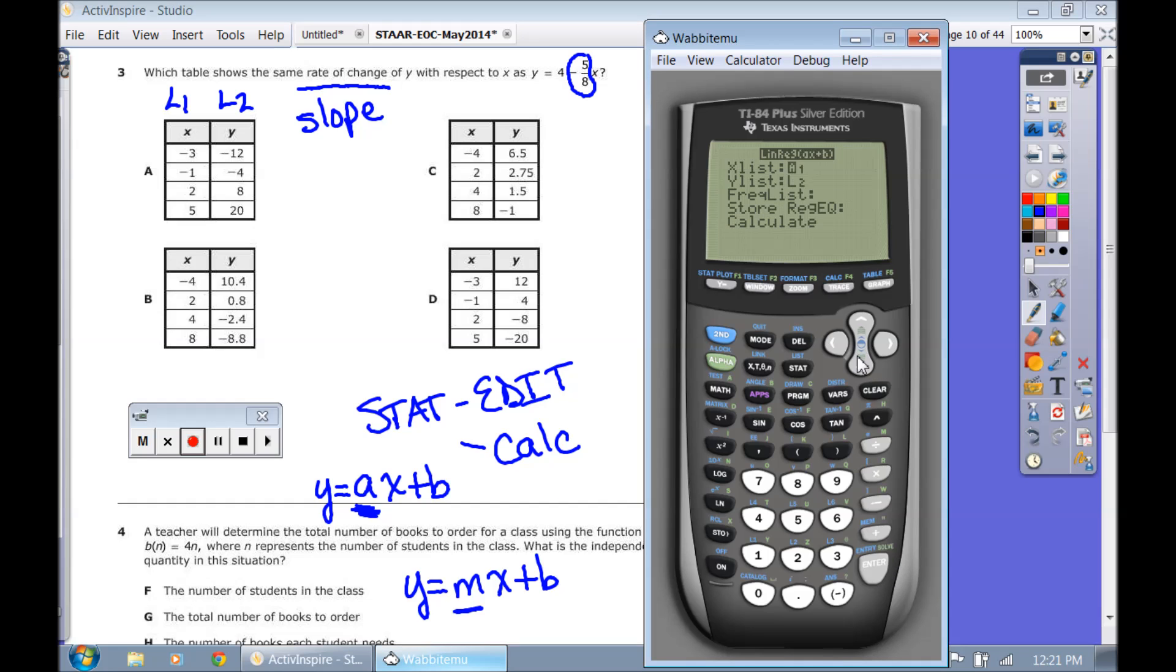But in this case, we're just concerned about just the a. So we're going to scroll down to calculate. And they tell me that the a is 4. The slope is 4. Does that match up to negative 5/8? No, it does not. So the slope is 4. We're looking for negative 5/8. The answer is not a.